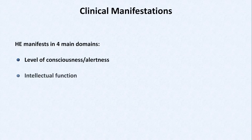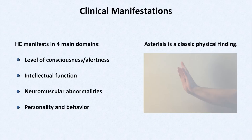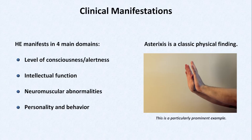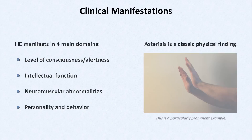Regarding the clinical manifestations, they can be placed into four main domains: the level of consciousness and alertness, intellectual function, neuromuscular abnormalities, and personality and behavior. The classic physical finding of hepatic encephalopathy is called asterixis, which is an intermittent, abrupt, and brief focal loss of muscle tone, most commonly observed by asking the patient to outstretch their arms with wrists extended and hold that position for 10 to 20 seconds — sometimes referred to as negative myoclonus. Importantly, asterixis is not specific for hepatic encephalopathy, but can also be seen in other forms of toxic metabolic encephalopathy, including uremia and hypercapnia.